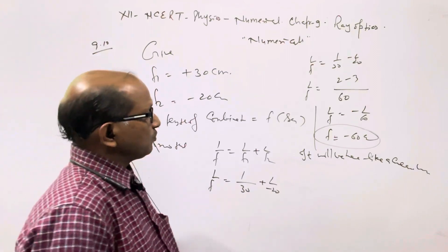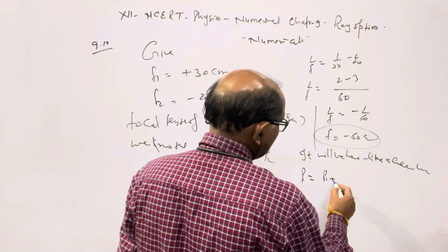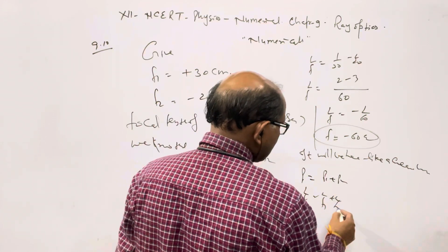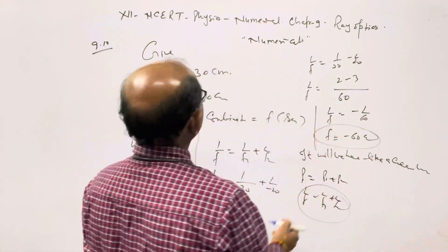Alternatively, we can use the power formula: P = P1 + P2, which equals 1/f1 + 1/f2. For this, we need to convert the focal lengths to meters.